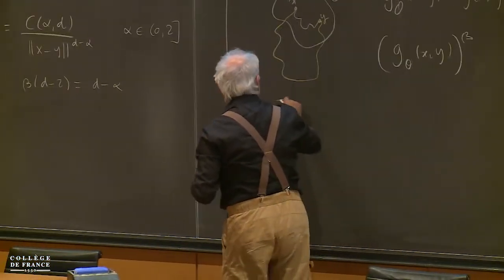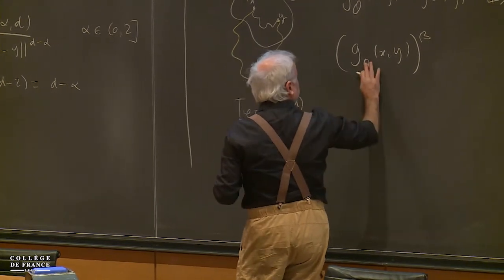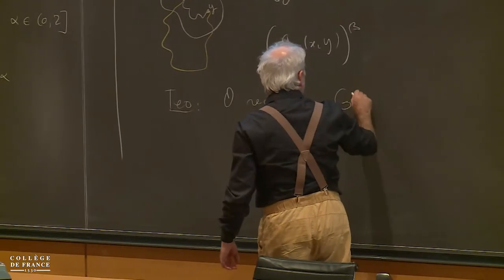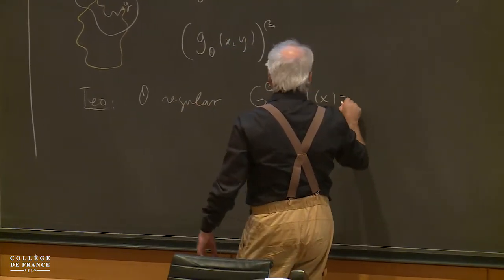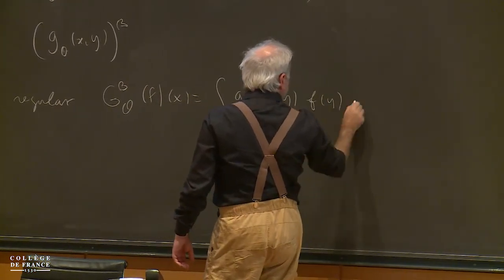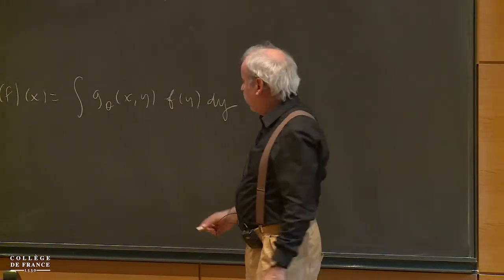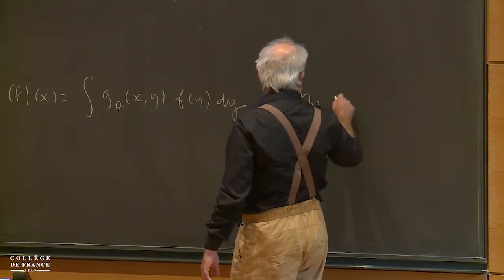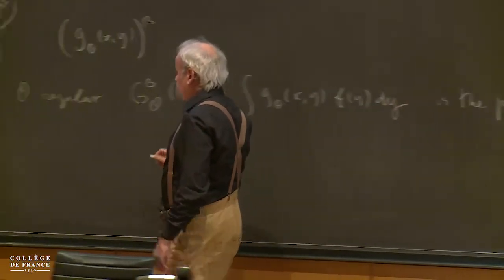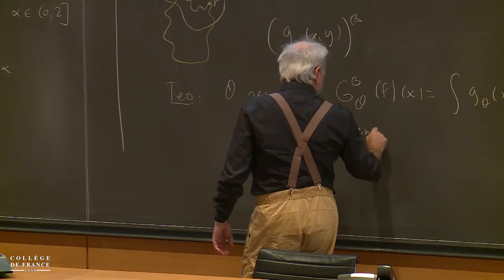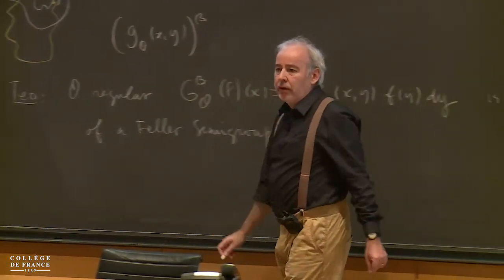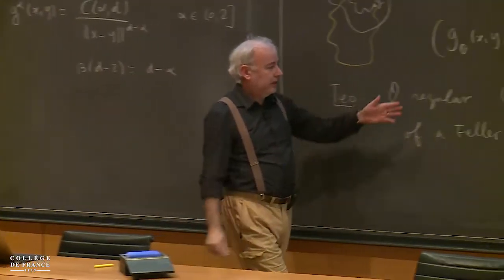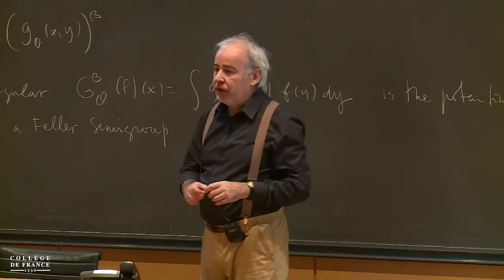The theorem should be something like: for any open set O, regular for the Dirichlet problem, the operator given by this kernel acting in a nice Banach space of functions — for example, the continuous bounded functions if the open set is bounded — is the potential of a Feller semigroup. Which means there is a nice process, like Brownian motion, whose potential is exactly this operator. At the end we will see some simulations for a very special case.